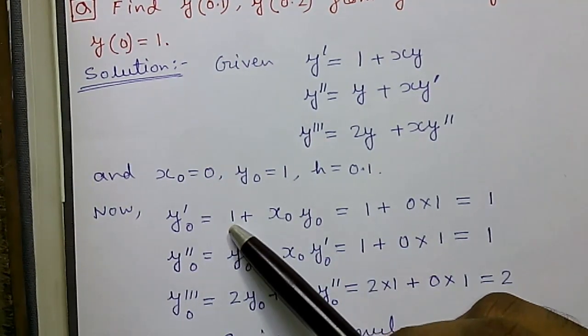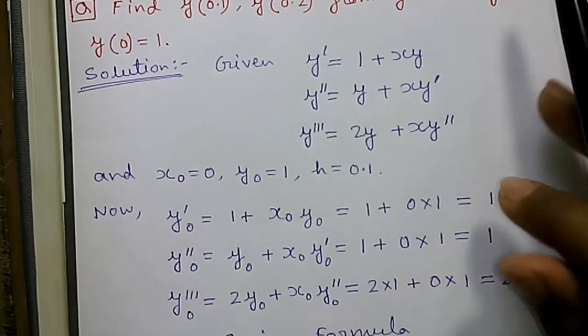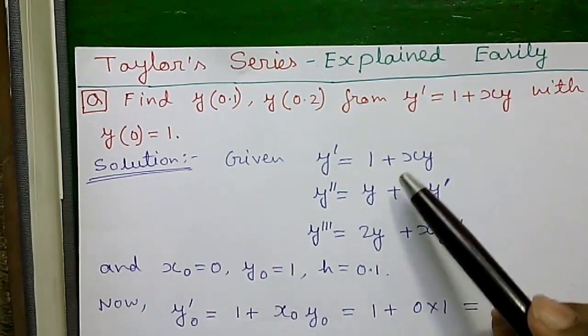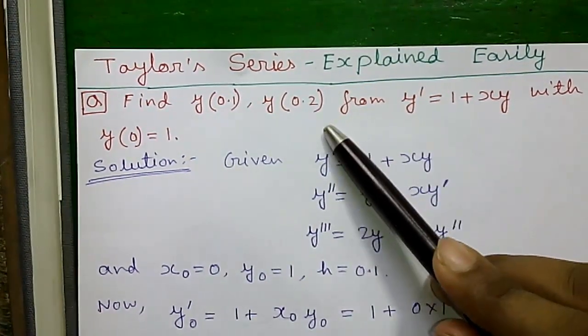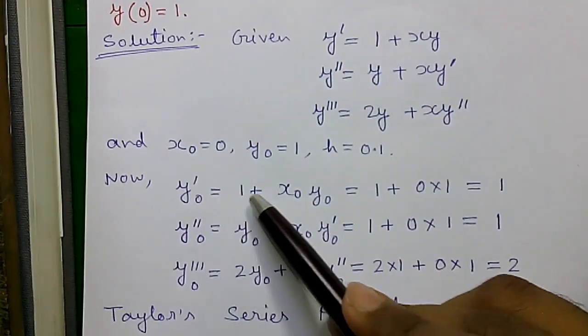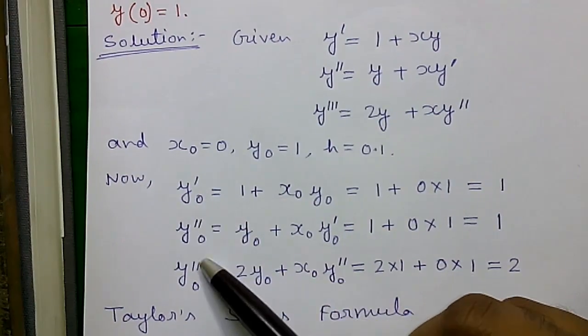Remember we are using this expression because this is our question. In your question the expression may be different but the process is same. Just differentiate continuously and get the formula and then using the x0, y0 value you will get all the y0 dash values.